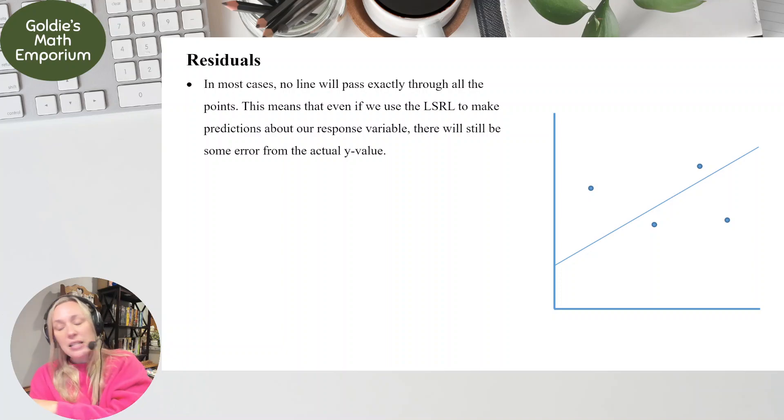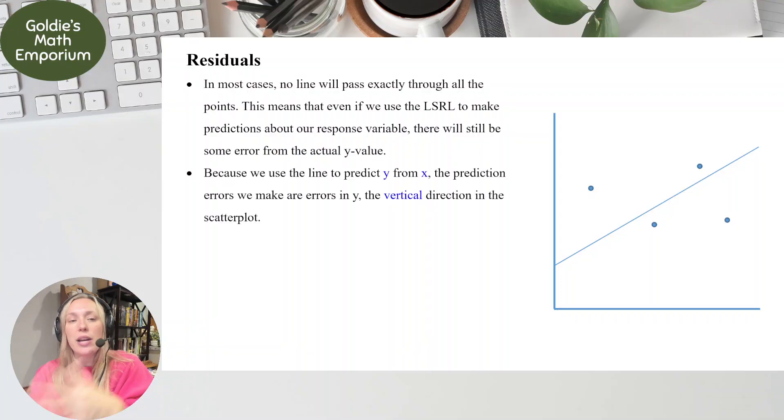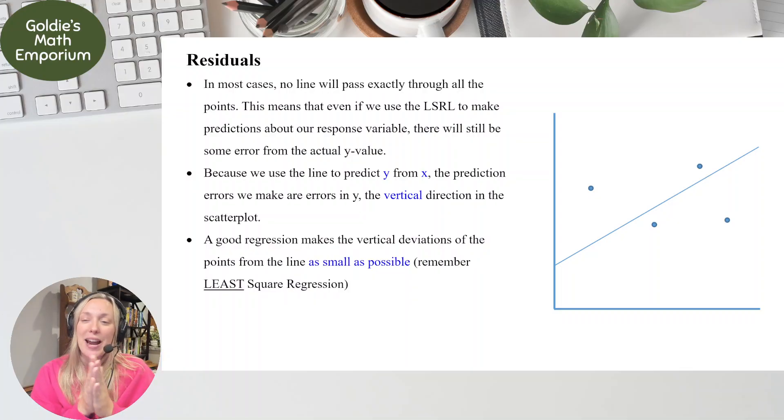So even though we know the least square regression line is not perfect, we still use it to make predictions about our y variable. Now, because it's not perfect, and because we still use it, there's going to be some error. It's some natural error that occurs. And because we use it to predict our y from our x, that error is going to be in the vertical direction, right? Since y is measured in vertical direction, the error is going to be in the vertical direction. Now that error, that error is what we're going to look at today.